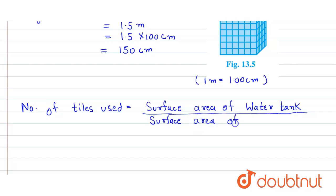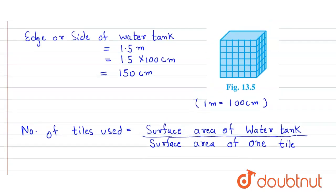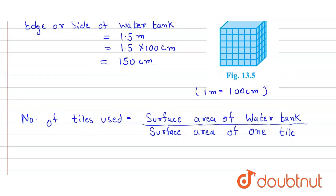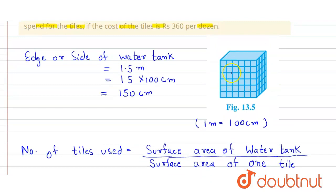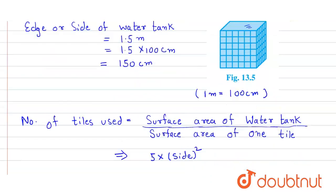So here the surface area of water tank will be equal to 5 × side squared. Here in this water tank we are only taking these four sides and the upper side; the base is excluded.